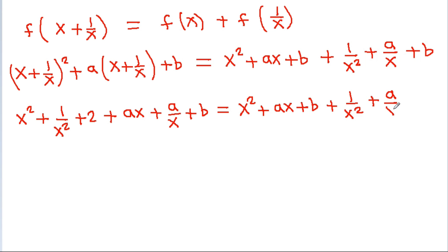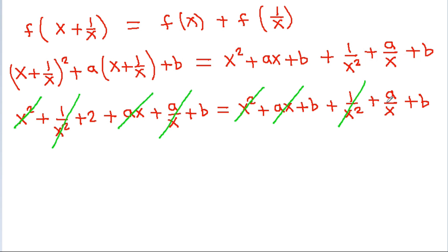Comparing both sides: x squared will cancel, 1/x squared will cancel, ax will cancel, a/x will cancel, and b will remain. So we get 2b is equal to b plus b plus something, leading us to conclude that b is equal to 2.